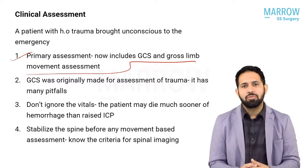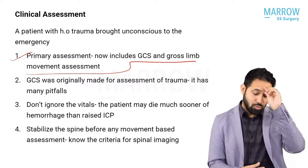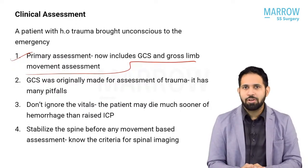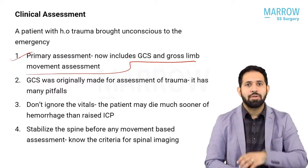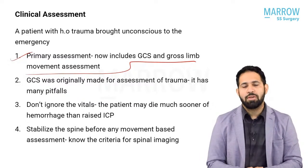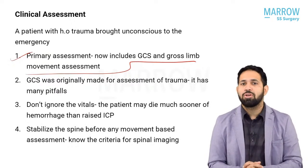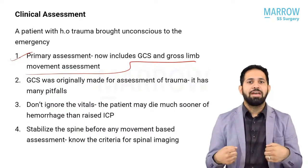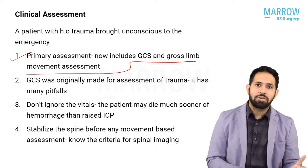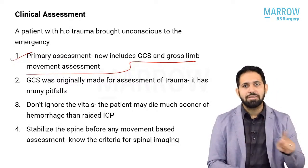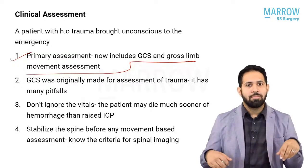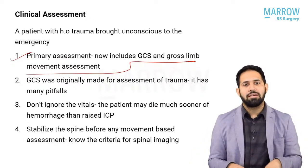The ideal stimulation is supraorbital pressure or trapezius pinch. In both M2 and M3, the legs are always extended and externally rotated — the difference is in how the upper limbs respond: extensor posturing in M2, flexor posturing in M3. If the patient is doing normal flexion but not localizing to the point of stimulation, it's an M4 response. M5 is localization, M6 is following commands completely.